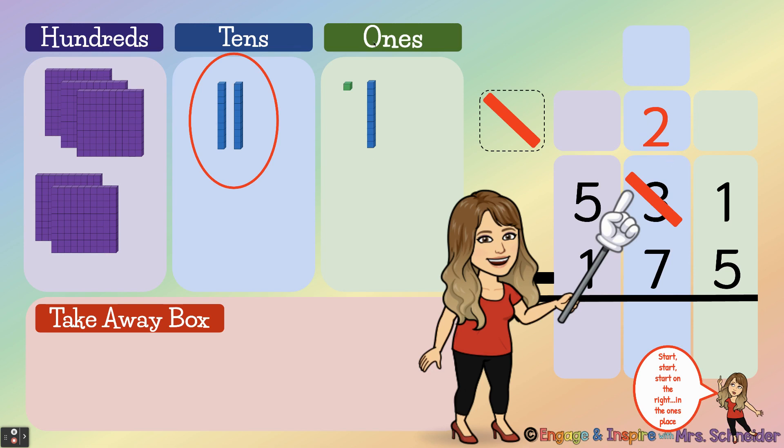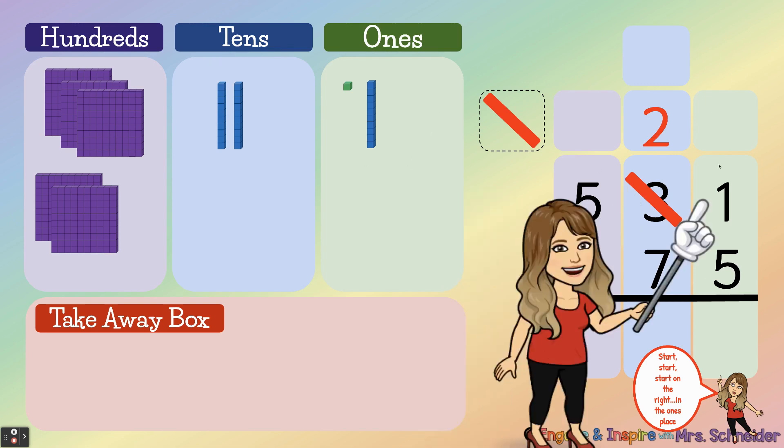We need to make sure we update our ones also because we don't have one one anymore. Now we have ten plus one, which is eleven. So we're going to change that one to eleven and now we have enough ones that we can take five away.